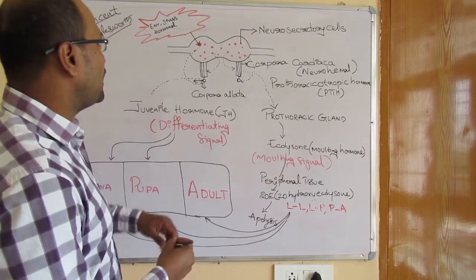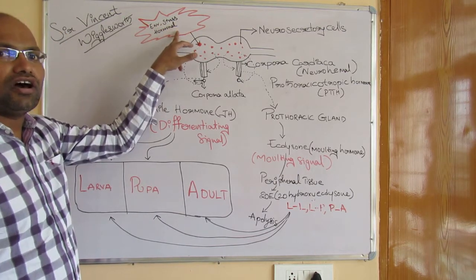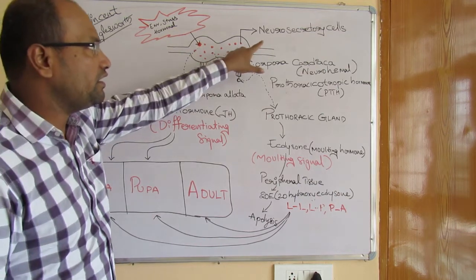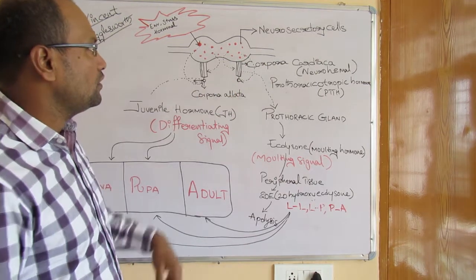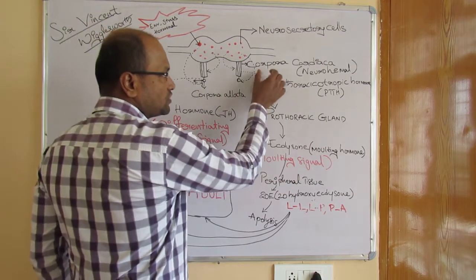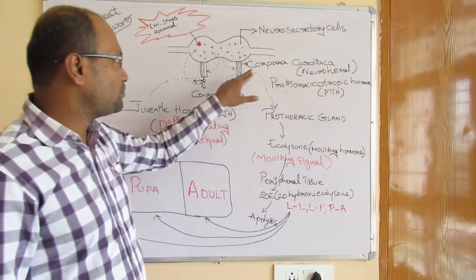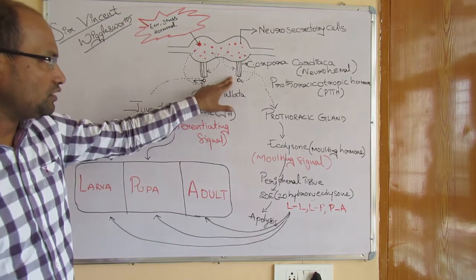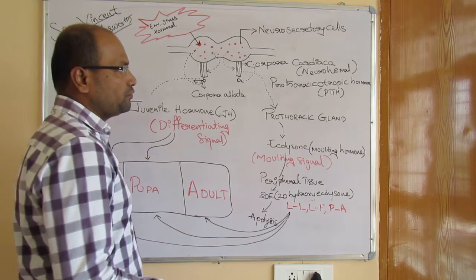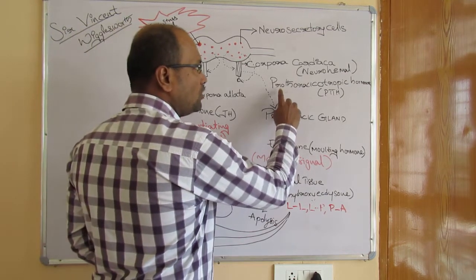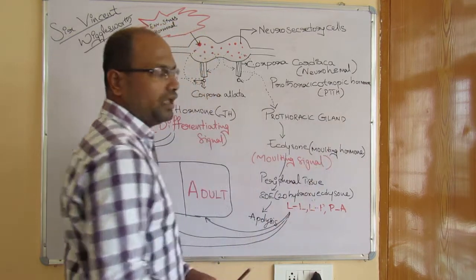Neurosecretory cells, under the influence of environmental conditions, stress, and hormonal regulation, secrete hormones that stimulate a structure called the corpora cardiaca. This is a neurohaemal structure present in the brain region. Upon stimulation, the corpora cardiaca produces a hormone called prothoracicotropic hormone, represented as PTTH.